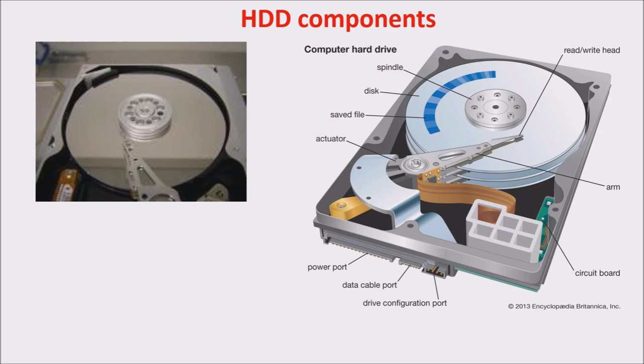The rigid nature of the platter in a hard drive is what gives them their name, as opposed to the flexible materials which were used to make floppy disks. Hard drives typically have several platters which are mounted on the same spindle. A platter can store information on both sides, requiring two heads per platter.